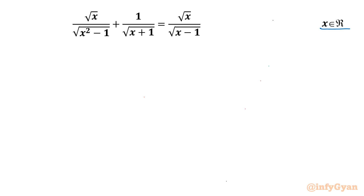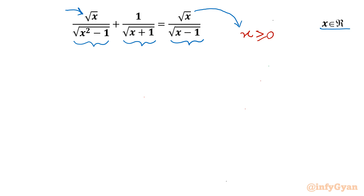Let us get started by writing the domain of the equation first. We can see there are 4 square roots involved — 3 in denominators and 1 in the numerator. For square root of x, we need x greater than or equal to 0 for a real solution. For square root of (x minus 1) in the denominator, x minus 1 must be greater than 0, so x must be greater than 1.